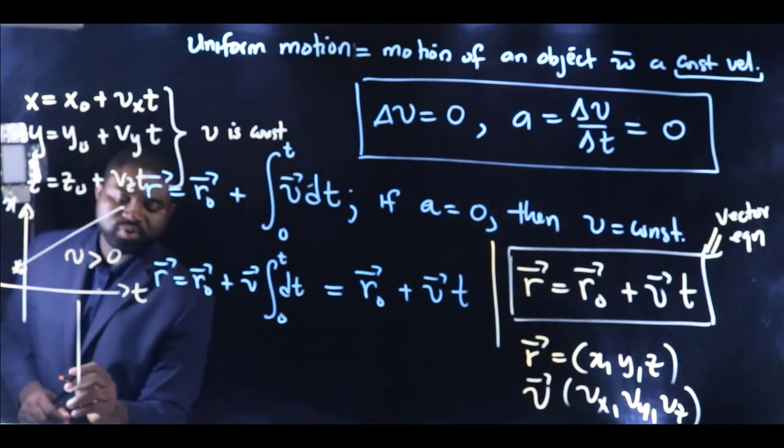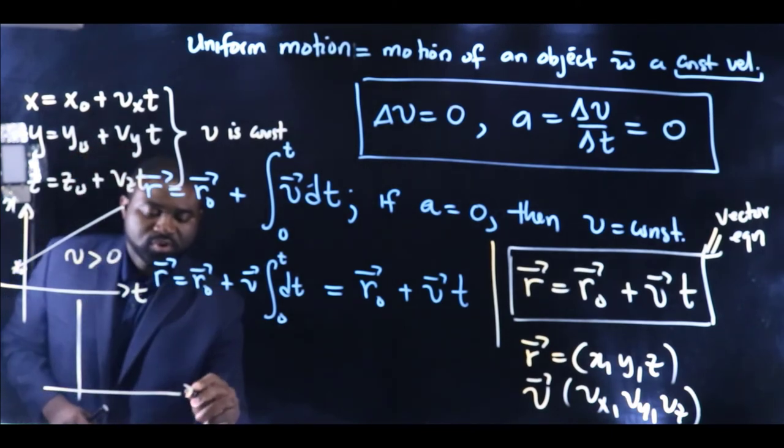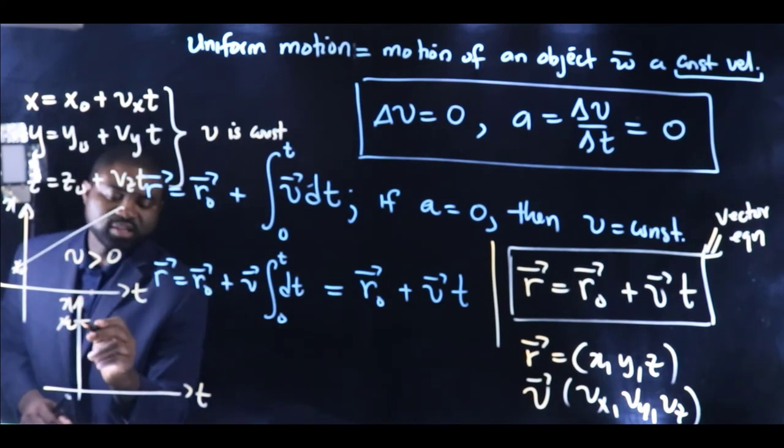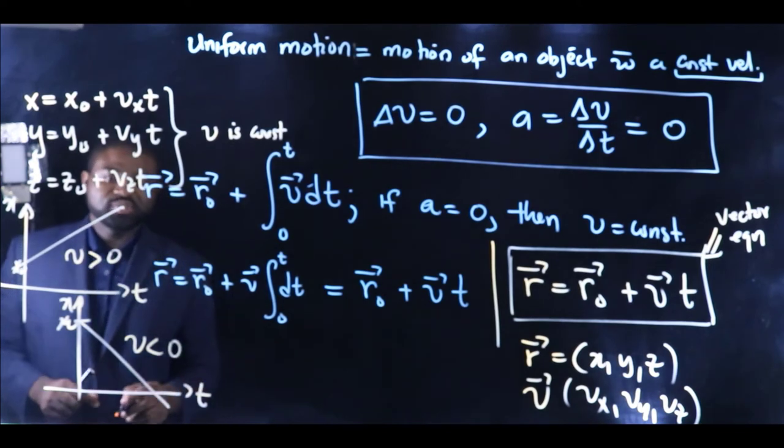But if we draw the graph of x, this is x₀, and the graph is like this. In this case, vₓ is less than zero.